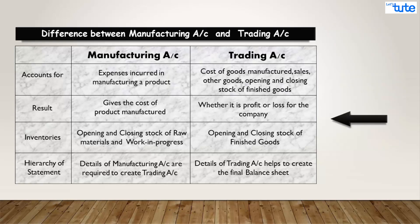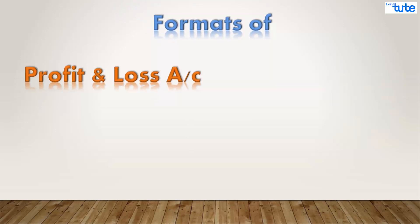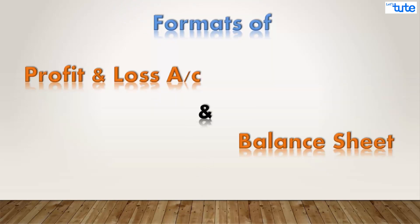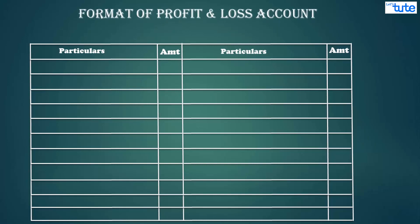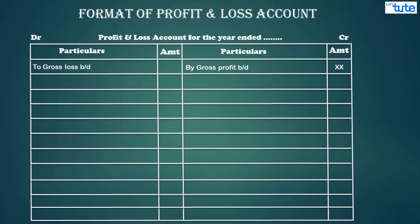Now let's move ahead with the profit and loss account. The format for the profit and loss account is more or less the same as studied earlier. The gross profit brought down from the trading account is the first item on the credit side of the profit and loss account. If there is a gross loss, it is the first item shown on the debit side of the profit and loss account.